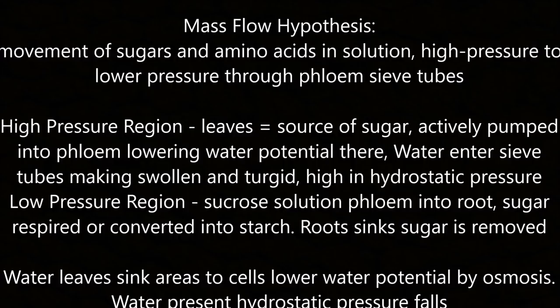The mass flow hypothesis: sugars and amino acids in solution move from high pressure to lower pressure through phloem sieve tubes. In high pressure regions (the leaves, source of sugar), sugars are actively pumped into the phloem, lowering the water potential there. Water enters the sieve tube making it swollen, turgid, and high in hydrostatic pressure. In low pressure regions, sucrose solution flows into the root where sugar is converted by respiration. When sugar is removed at the root sink, water leaves the sink areas by osmosis and hydrostatic pressure falls.